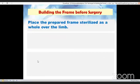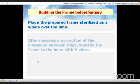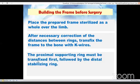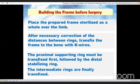And the sterilized prepared frame is placed as a whole over the limb. The frame is transfixed to the bone after necessary corrections of the distances between rings. First, you must fix the proximal supporting ring, then the distal stabilizing ring, and the intermediate rings are finally transfixed.